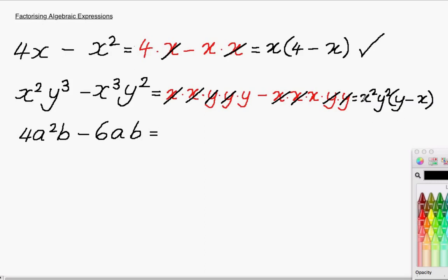Once again to check, you can multiply out your factorised form here. x squared y squared times y gives you x squared y cubed. Great. And x squared y squared times minus x gives you minus x cubed y squared. So once again, you yourself know that you are correct there.